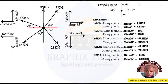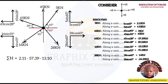The next step is to sum all forces acting along the x-axis and all forces acting along the y-axis separately. The summation of all horizontal (x-axis) forces equals: 2.11 − 57.39 − 13.10 + 14 = −54.38 kilonewton.